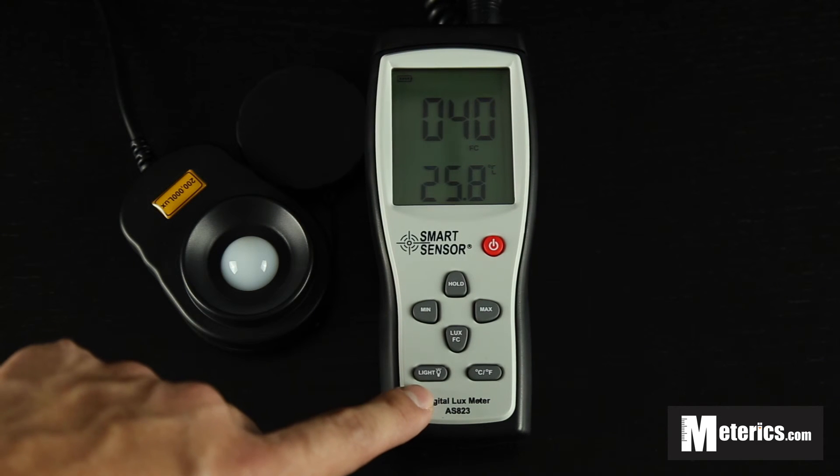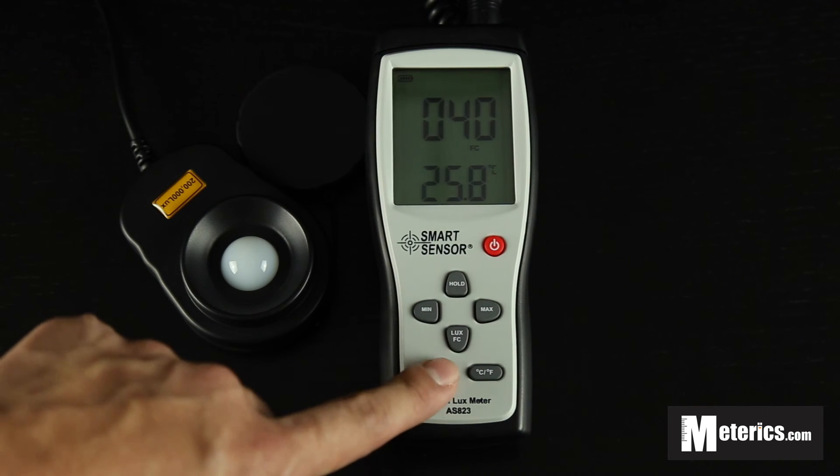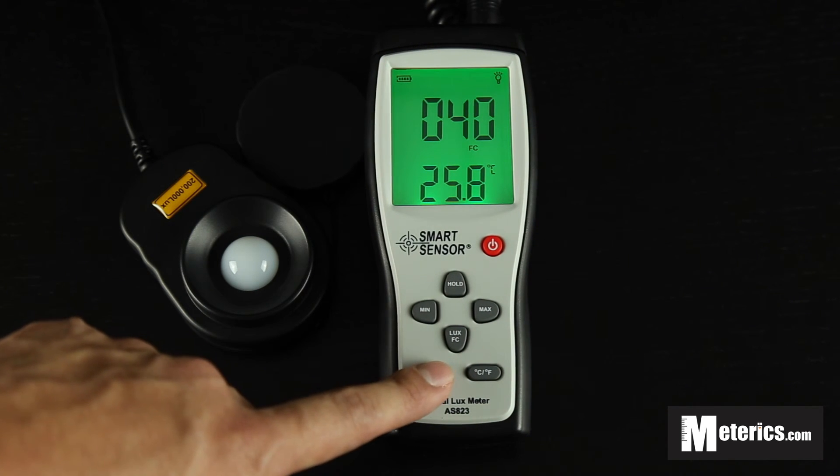And last but not least it comes with a backlight. It is a very green and bright backlight, so perfect if you're measuring during darker surroundings or during nighttime. Just press that. There you go.